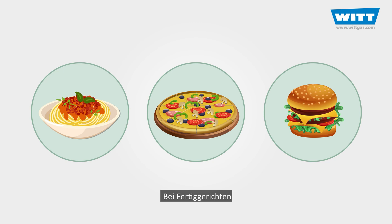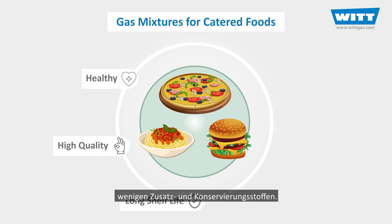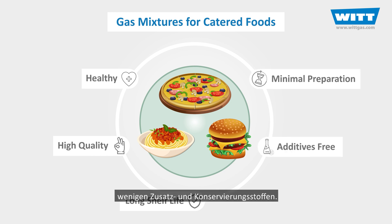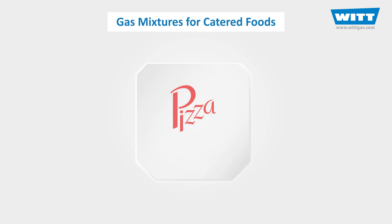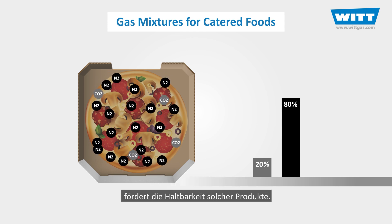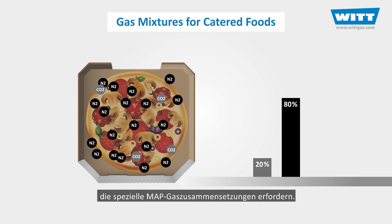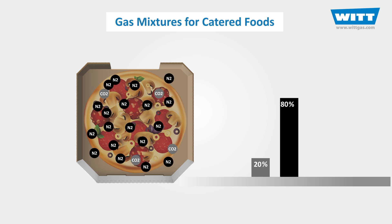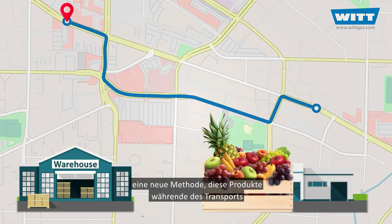With ready meals and catered foods, customers expect healthiness and high quality with long shelf life, without chemical additives and with minimal preparation. In order to meet these demands, atmosphere control combined with the correct temperature is the best solution. Low oxygen level with a high level of carbon dioxide will promote such product shelf life. Fresh produces are one of the most important types, and we'll show you in another video a new exciting method for keeping them fresh during transport.